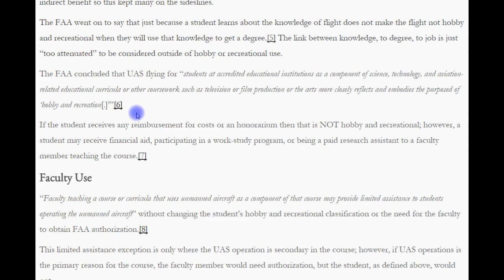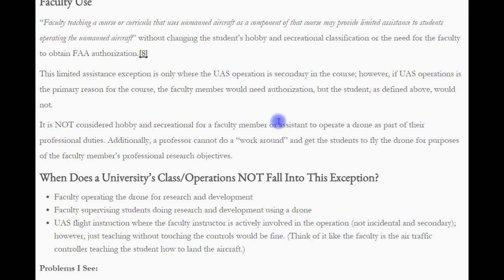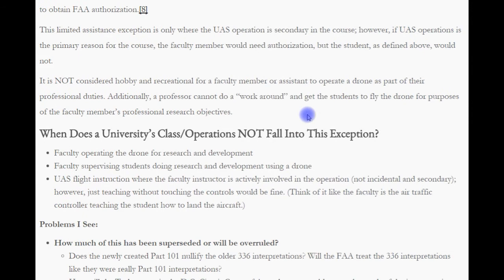However, a student may receive financial aid, participate in a work-study program, or be a paid research assistant to a faculty member teaching the course. Now let's get into faculty use. Faculty teaching a course or curricula that uses unmanned aircraft as a component may provide limited assistance to students operating the unmanned aircraft without changing the student's hobby and recreational classification or requiring the faculty to obtain FAA authorization. This limited assistance exception is only where the UAS operation is secondary in the course. However, if the UAS operation is the primary reason for the course, the faculty member would need authorization, but the student would not.